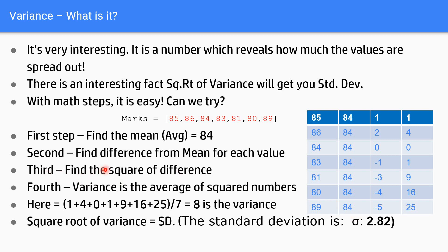I need to find the difference from the mean for each value. 85 minus 84, 86 minus 84, 84 minus 84, 83 minus 84. I have calculated that: 1, 2, 0, minus 1, minus 3, minus 4, minus 5 is the value that I get after I subtract this value from the assumed values.